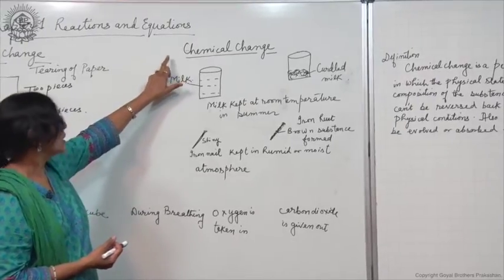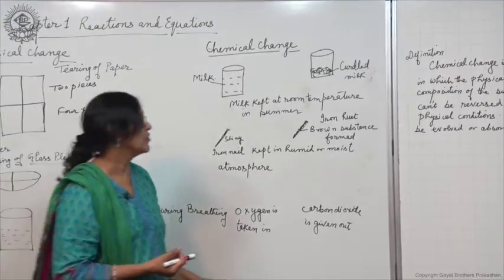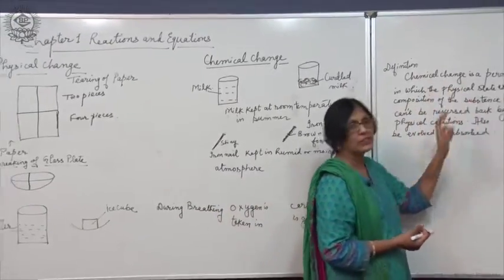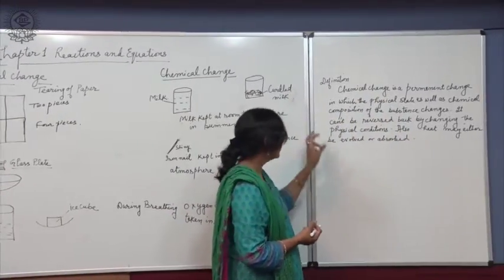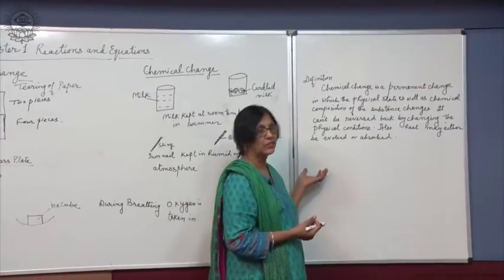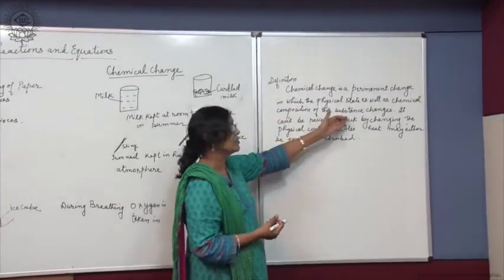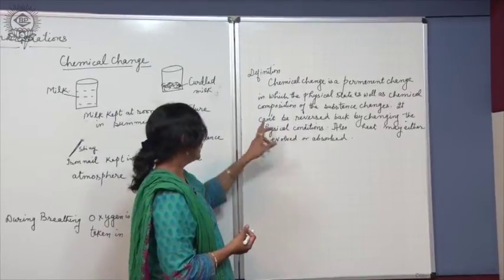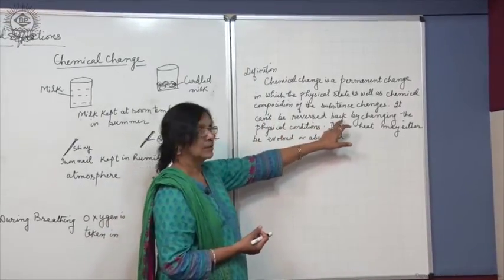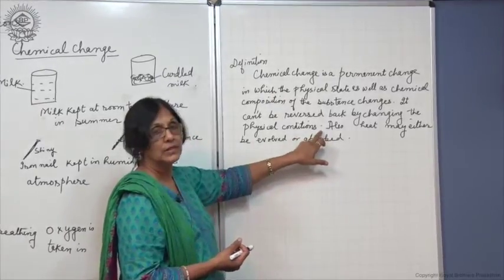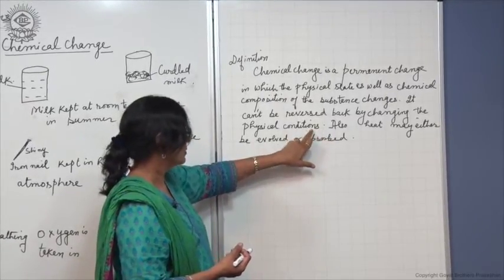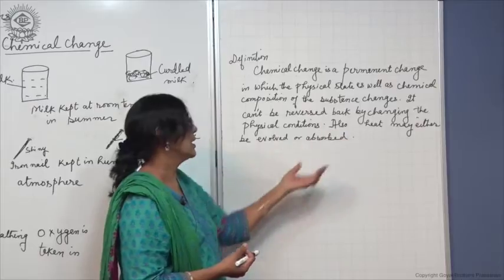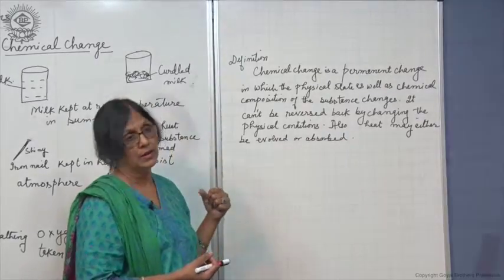And now, we can define what is a chemical change. Chemical change is a permanent change in which the physical state as well as the chemical composition of the substance changes. Even the colour may change. It cannot be reversed back by changing the physical conditions like temperature or pressure. Also, heat may either be evolved or absorbed.